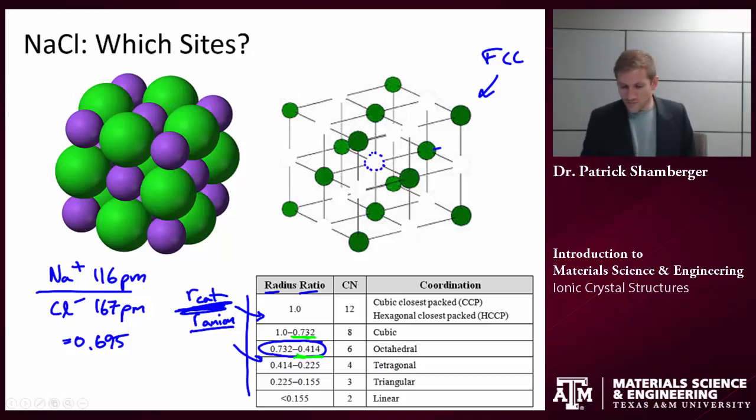Again, we found the radius ratio, cation over anion, we looked at our table and we say that in the sodium chloride lattice, sodium wants to occupy octahedral sites. It's going to sit in octahedral sites such as this one.